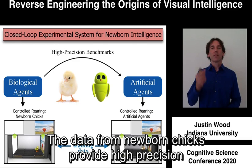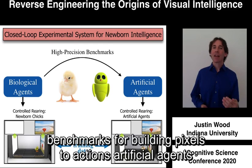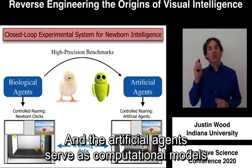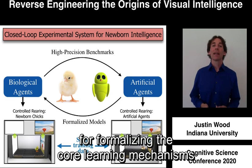The data from newborn chicks provide high-precision benchmarks for building pixels-to-actions artificial agents that learn like newborn brains. And the artificial agents serve as computational models for formalizing the core learning mechanisms in newborn brains.